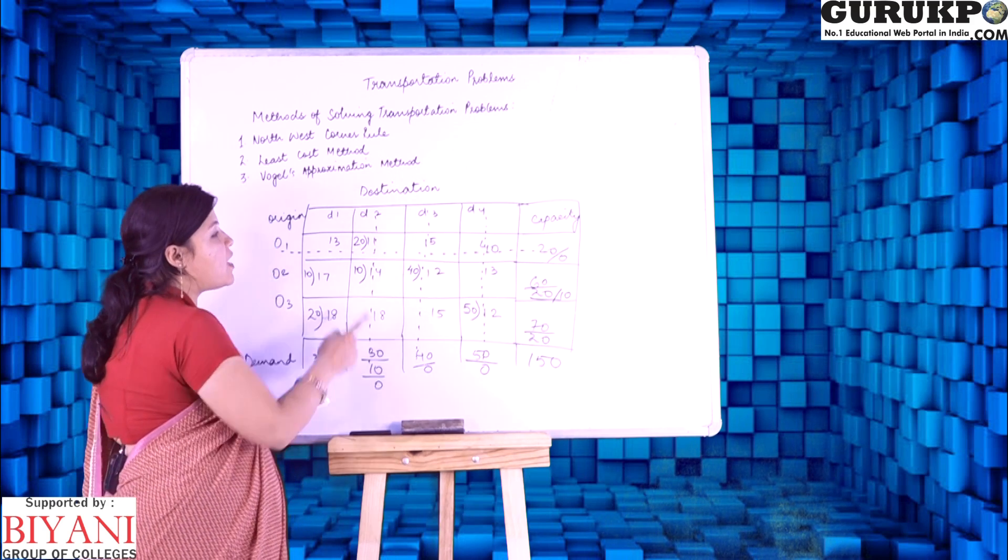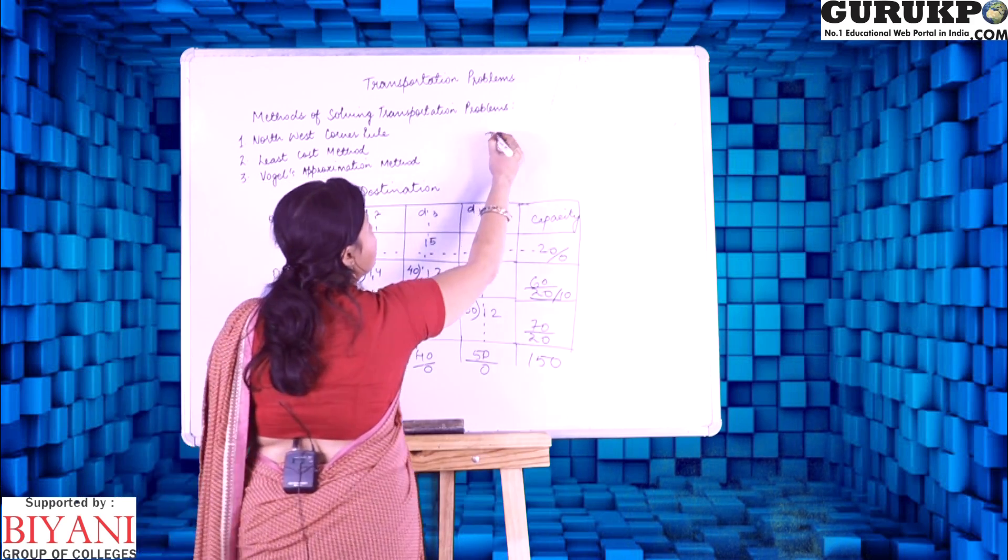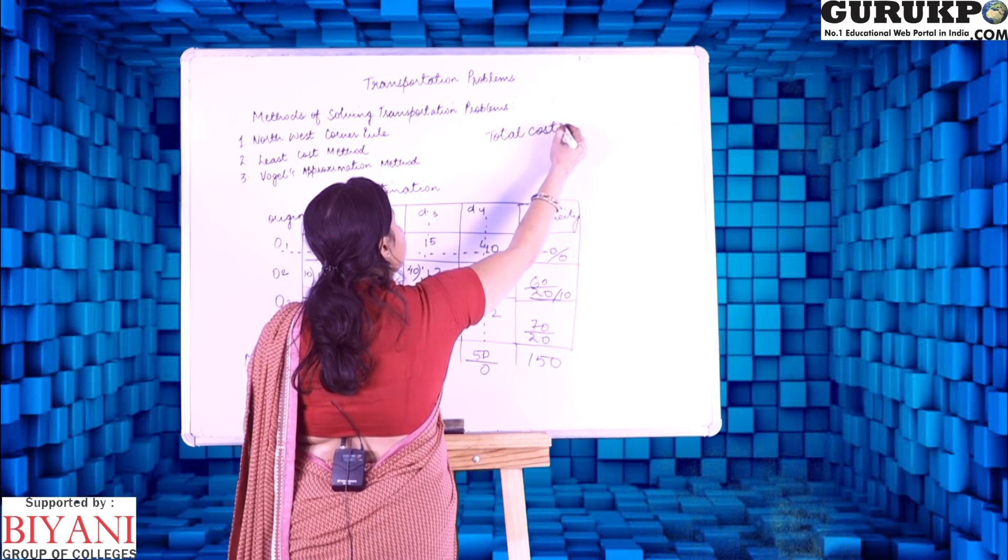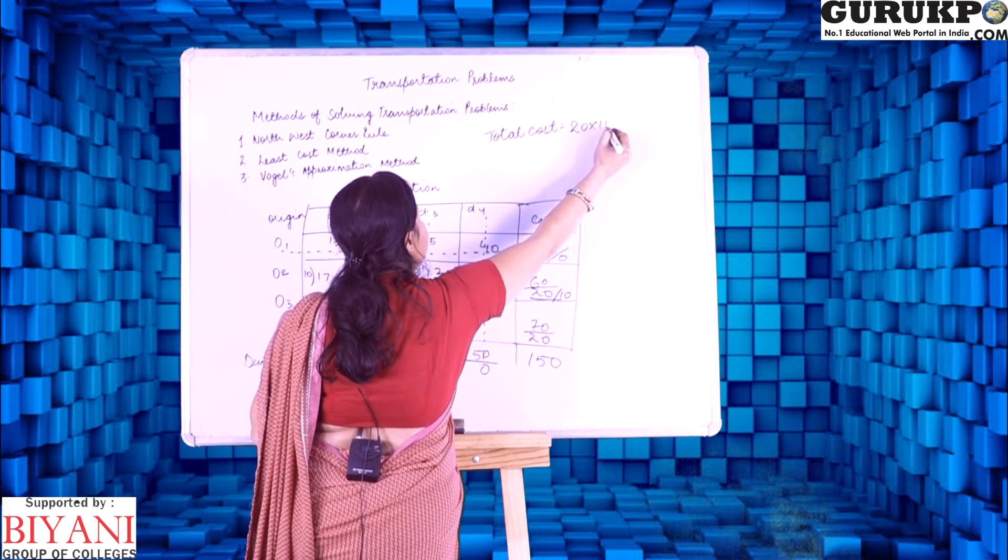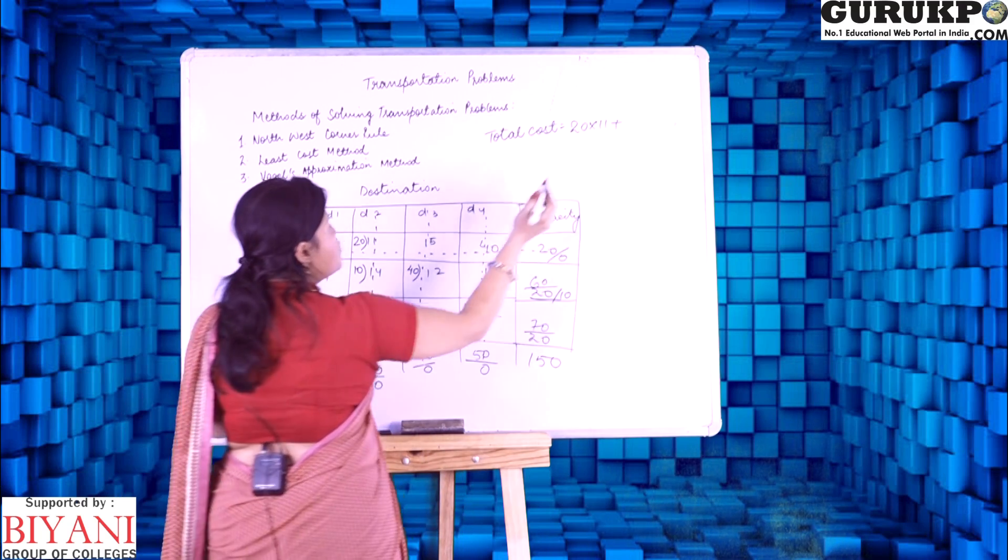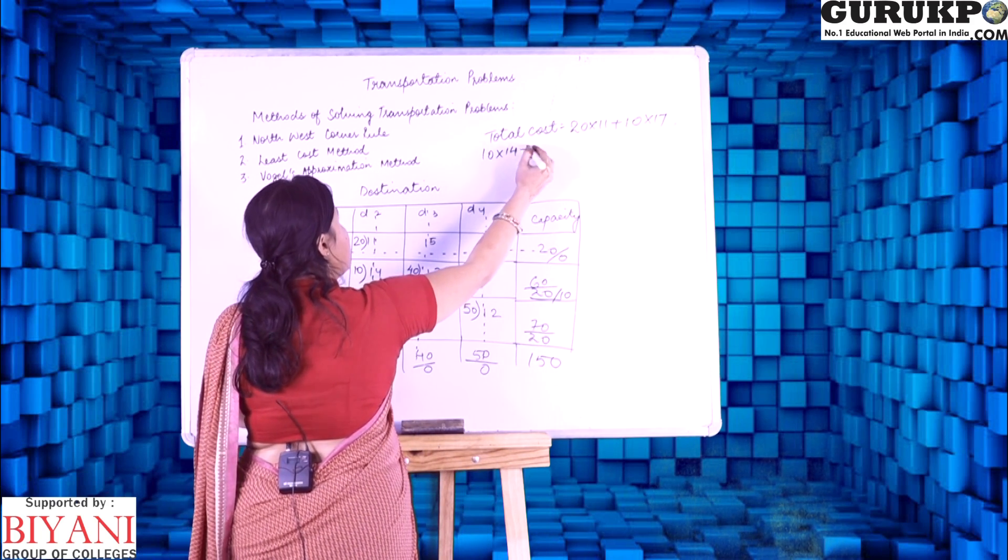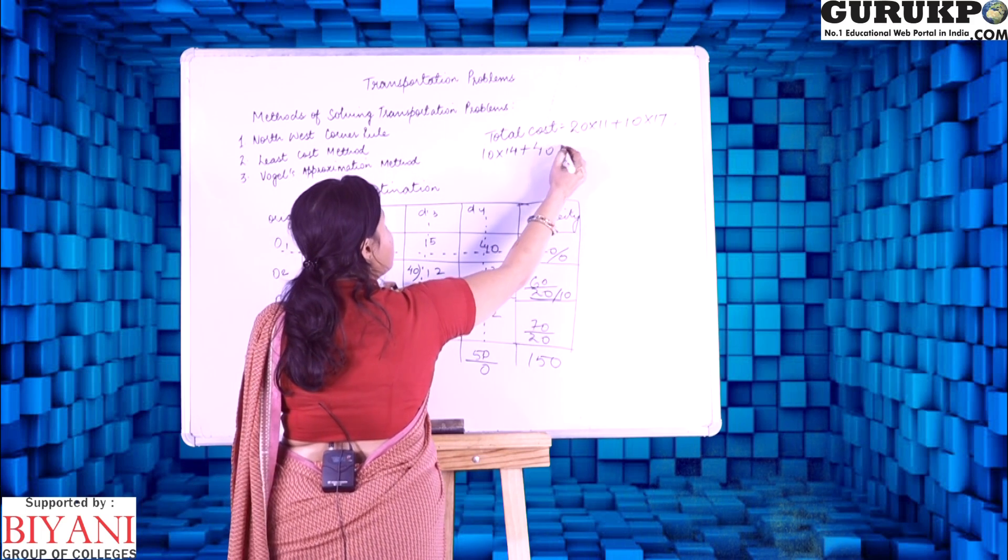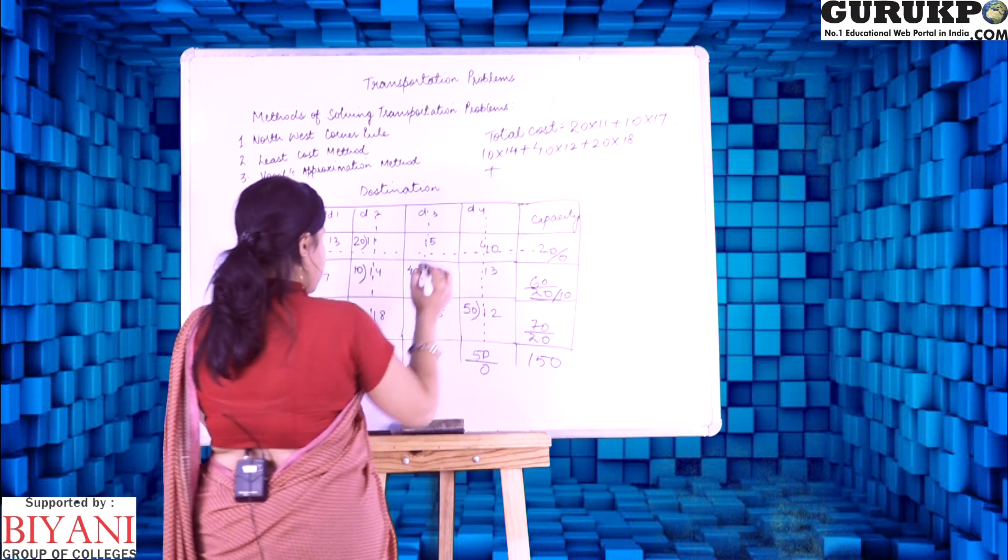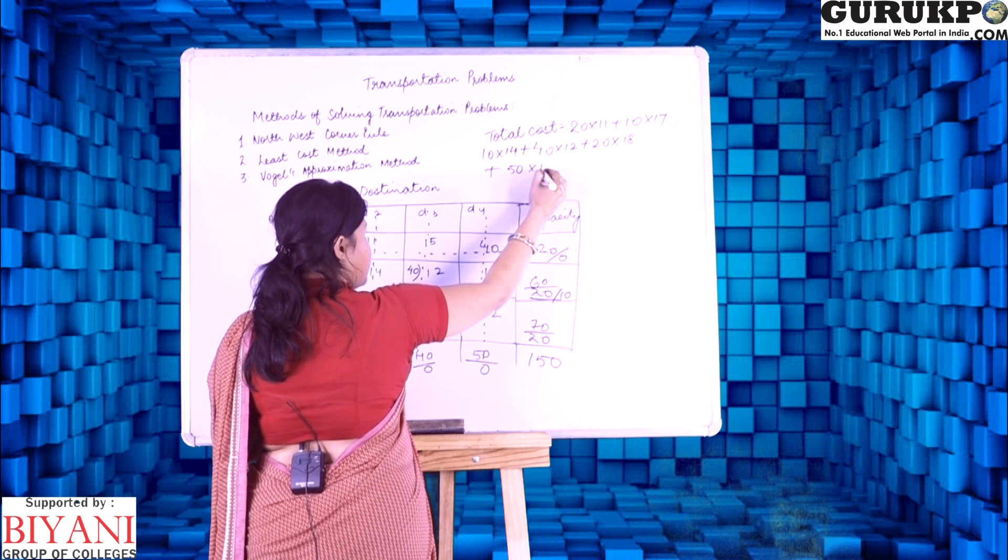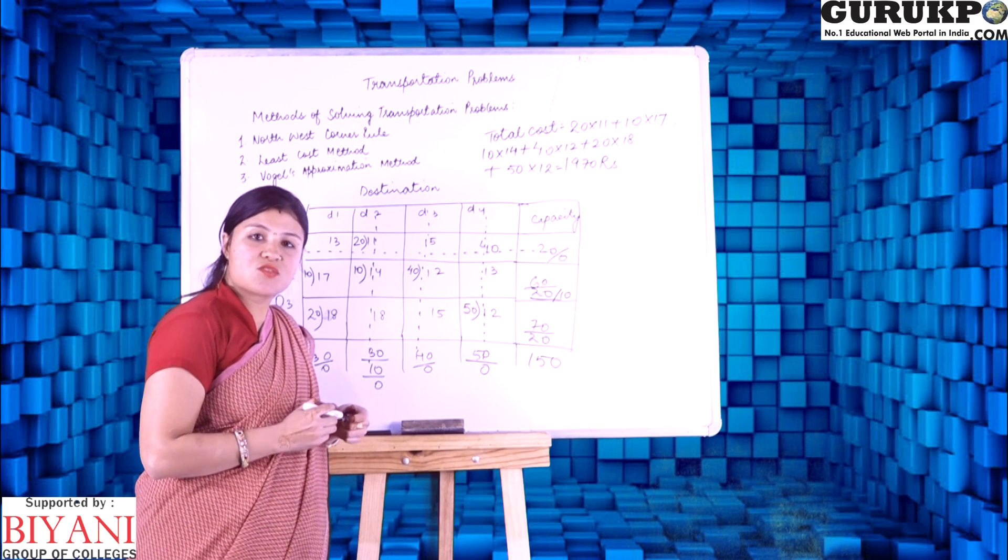Now, the next step is to multiply the allocations with the necessary cost. Now, that one is 20 into 11, it comes to 20 into 11 plus the next is 10 into 17. Now, the next is 10 into 14 plus the next is 40 into 12 plus the next is 20 into 18 plus and the next is 50 into 12. Then, it comes to 1970 rupees, so this is the cost according to least cost method.